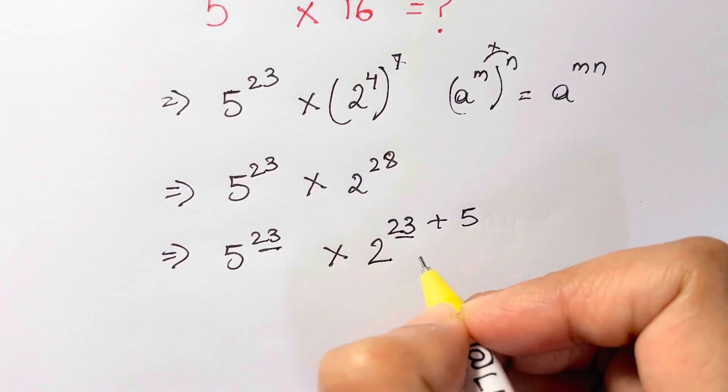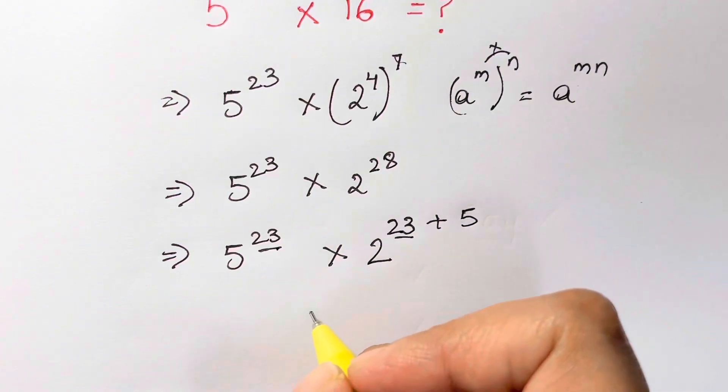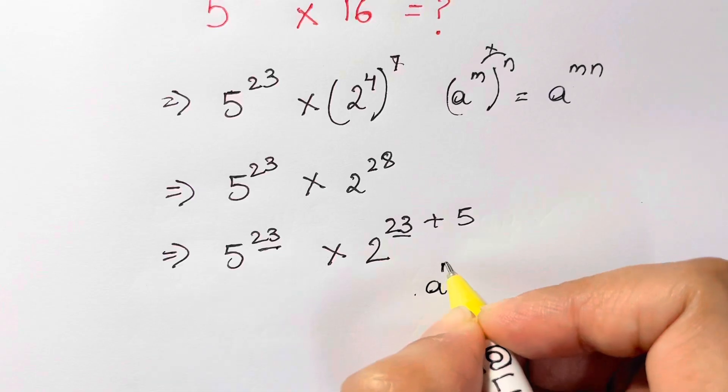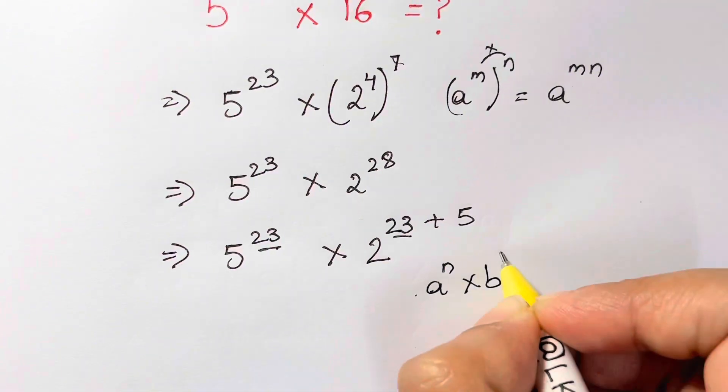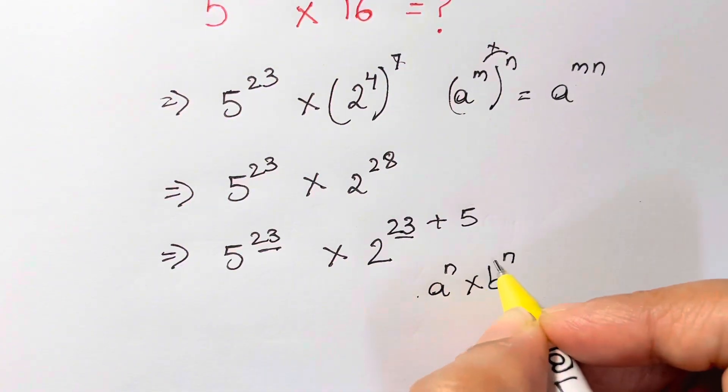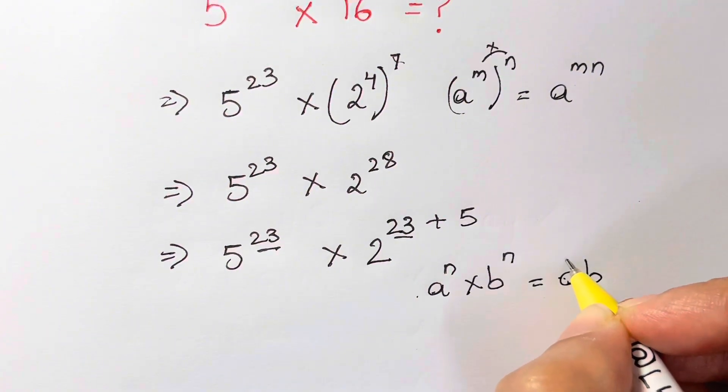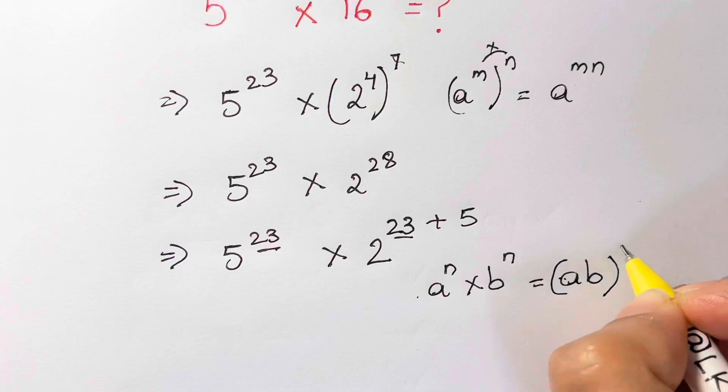The rule which I'm going to apply is this one: whenever you have a to the power of n times b to the power of n, when bases are different and exponents are the same, you write it like this: product of the two bases, a times b, whole to the power of n.